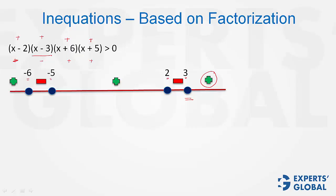And therefore, the answer is, we need the positive values, and therefore the answer is x greater than 3, this particular range, or this particular range when x is between negative 5 and positive 2, or the third range when x is less than minus 6.